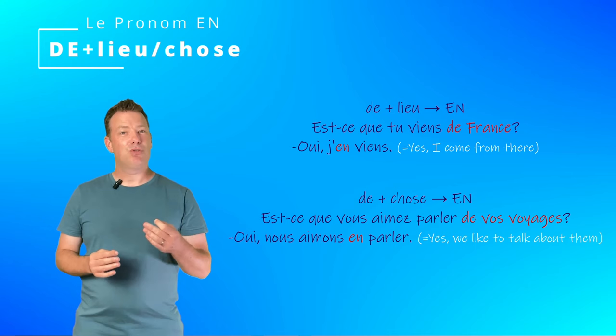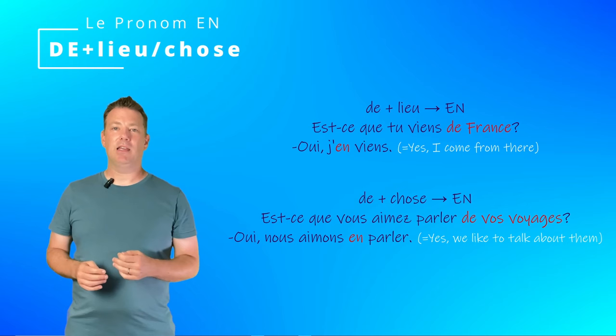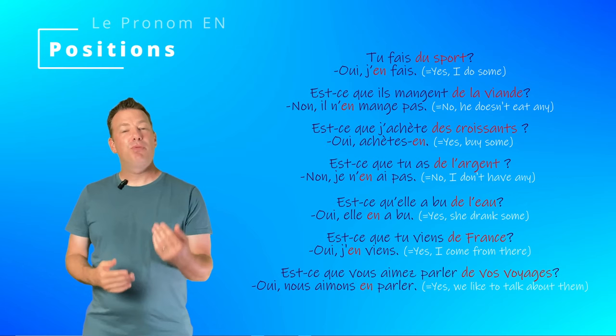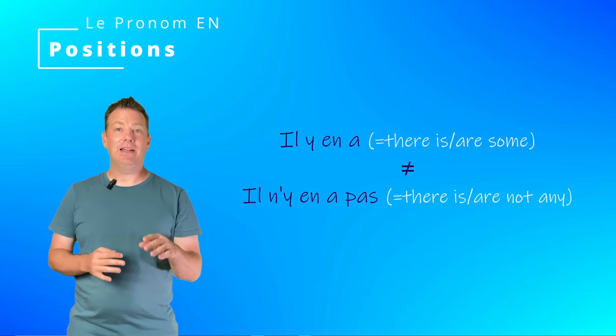Second example: Est-ce que vous aimez parler de vos voyages? Oui, nous aimons en parler. Here again, EN replaces DE VOS VOYAGES, which is a thing introduced by DE. As we can see in these examples, the pronoun EN usually comes before the verb. That includes its use with IL Y A: Il y en a, or Il n'y en a pas in the negative.